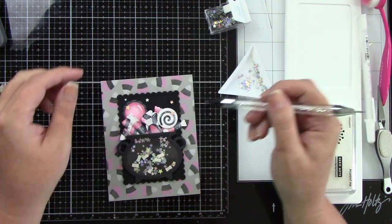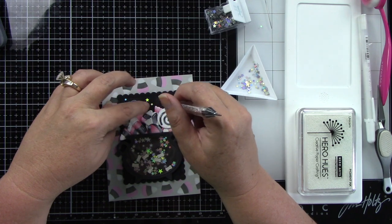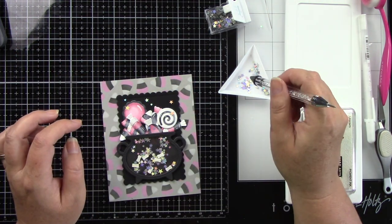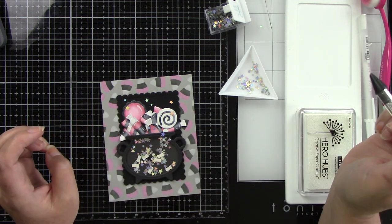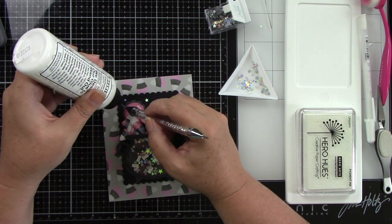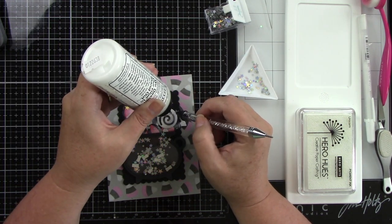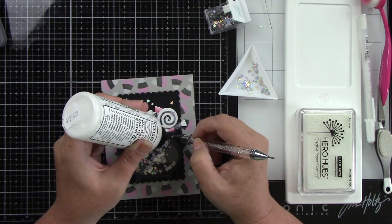I'm also going to adhere this to a white A2 size card base. I did think about trimming down that background panel but I opted to not do that because I just really love all that candy. I think it's so fun, all of those candy corns. I'm just going to add my glue behind all of these little stars. These stars are so shiny, they're almost like a mirror. It's so pretty.